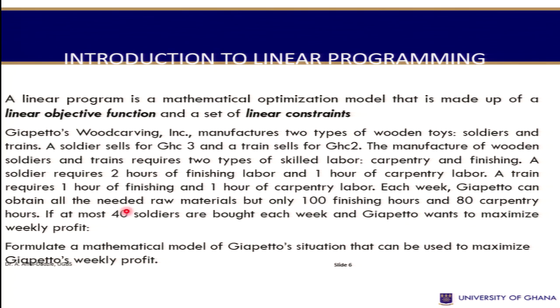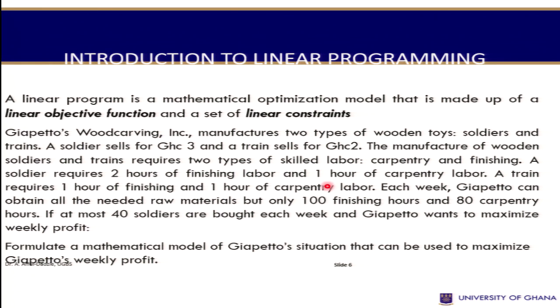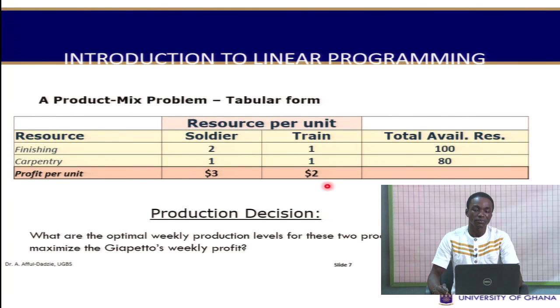A soldier requires two hours of finishing labor and one hour of carpentry. A train requires one hour of finishing and one hour of carpentry. Each week, Giappetto can obtain all needed raw materials, but only 100 finishing hours and 80 carpentry hours. At most 40 soldiers are bought each week. We need to formulate a model to maximize weekly profits.